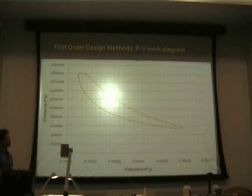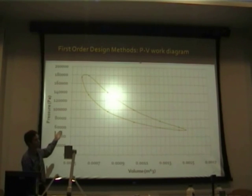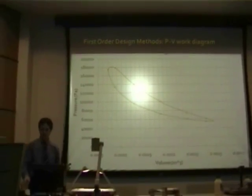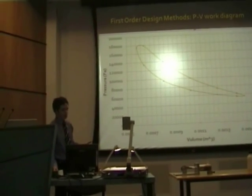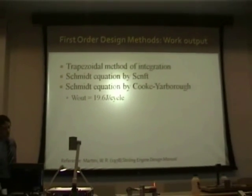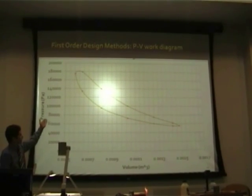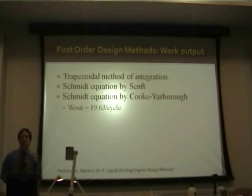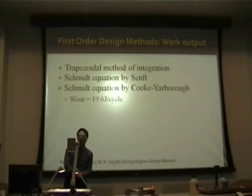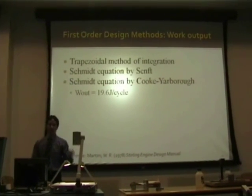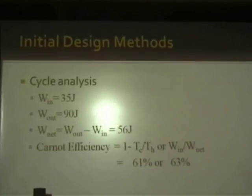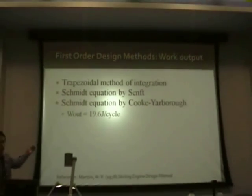First order design methods — now looking at the actual engine with a much more realistic PV work diagram. There are a couple of ways of determining the work output: numerical or analytical methods. An analytical method is the trapezoidal method of integration, which is finding the area enclosed in the curve. There are also numerical methods such as the Schmidt equation. We arrive at a work output for the more realistic engine of 19.6 joules, compared to 90 joules from the idealized cycle.